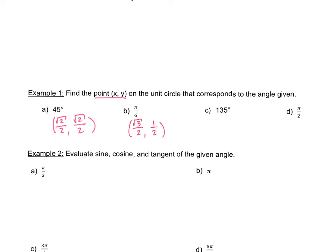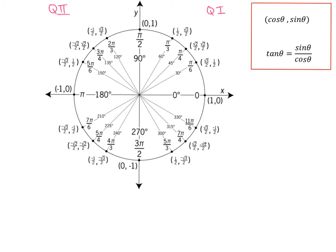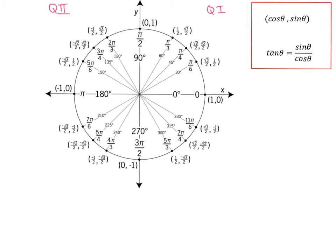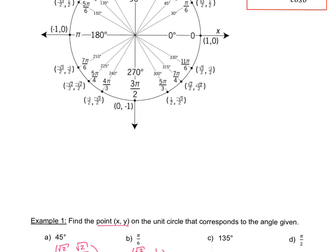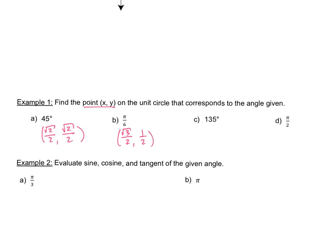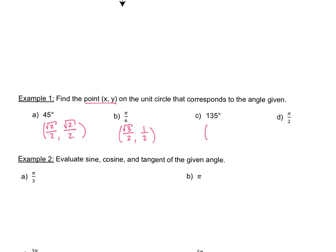The next one is 135 degrees. The radians for 135 is 3 pi over 4. The coordinates are identical in value to pi over 4 — square root of 2 over 2 — but the first one is negative because it's in the second quadrant.